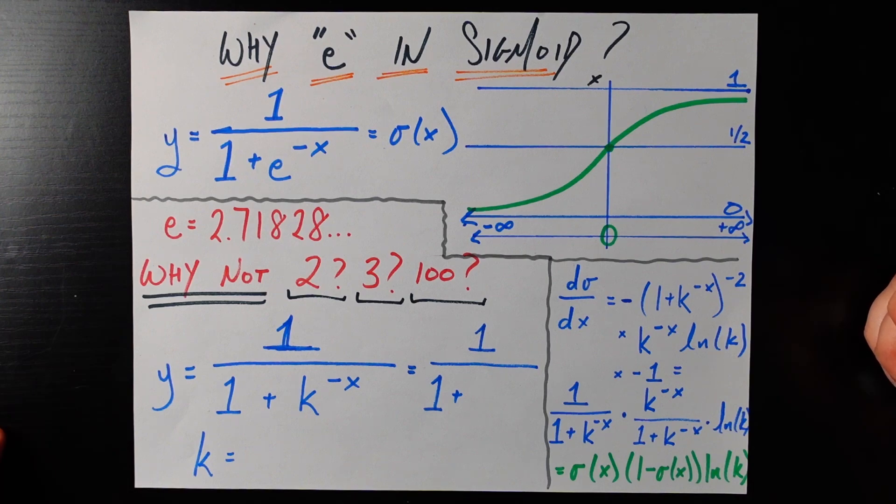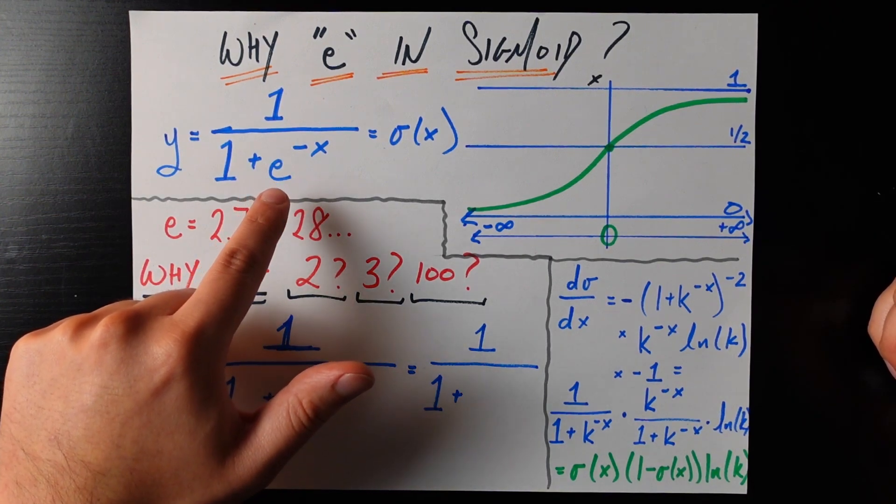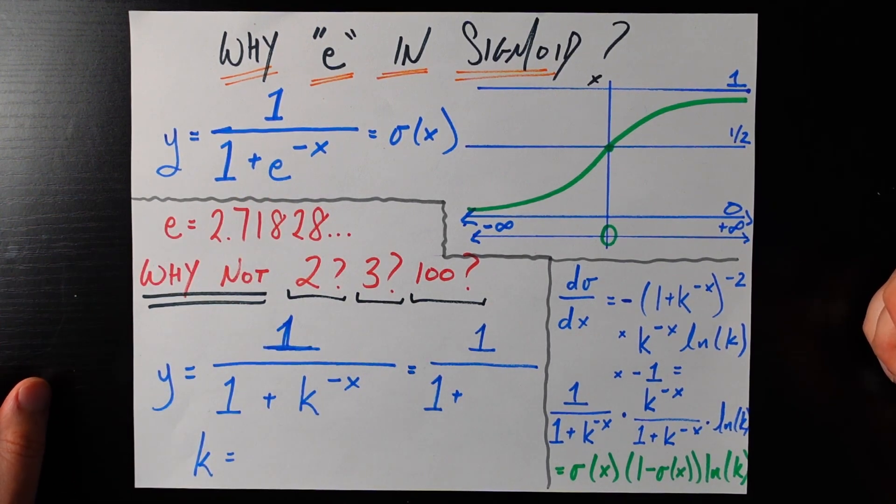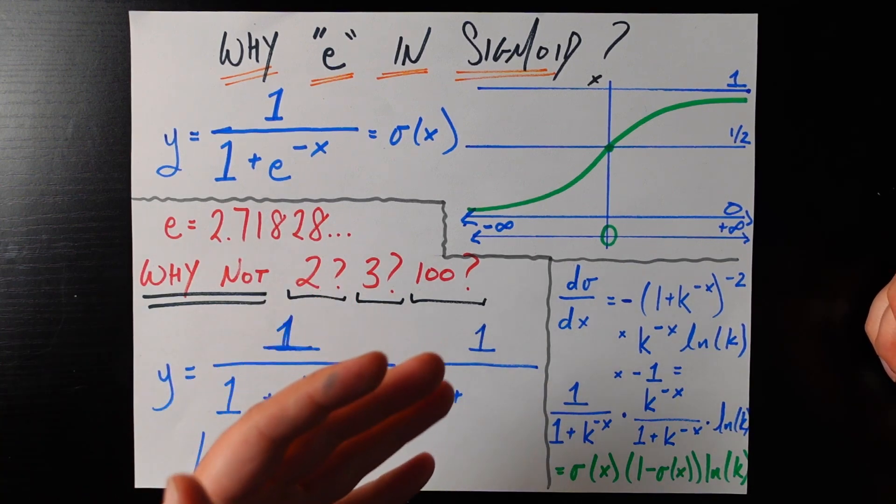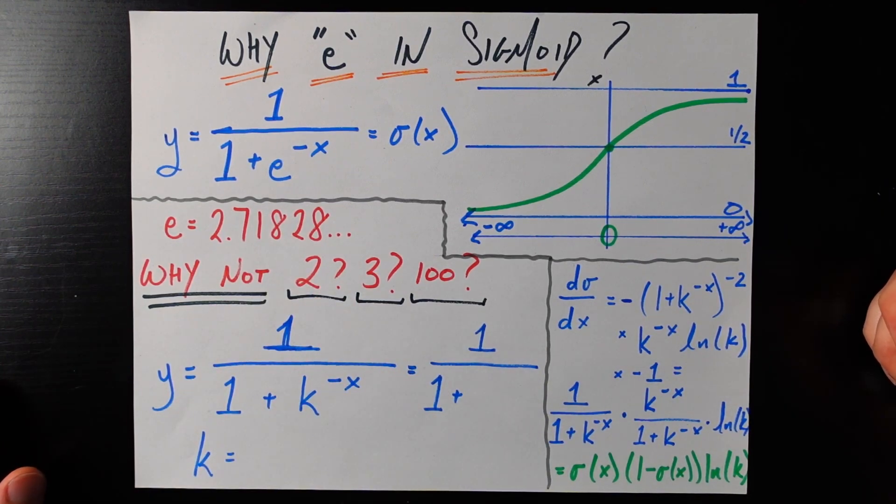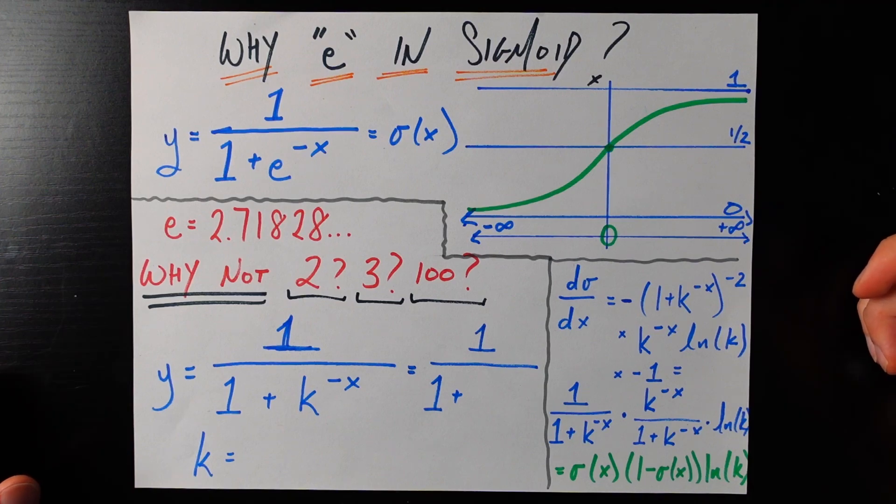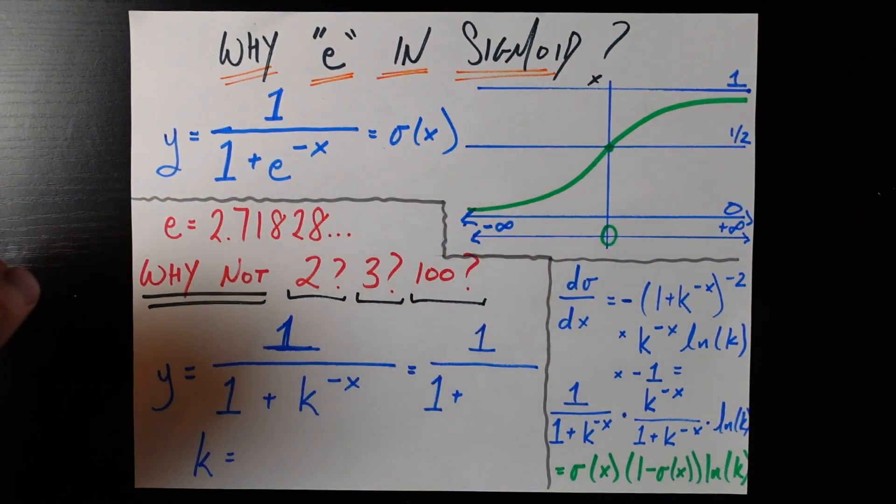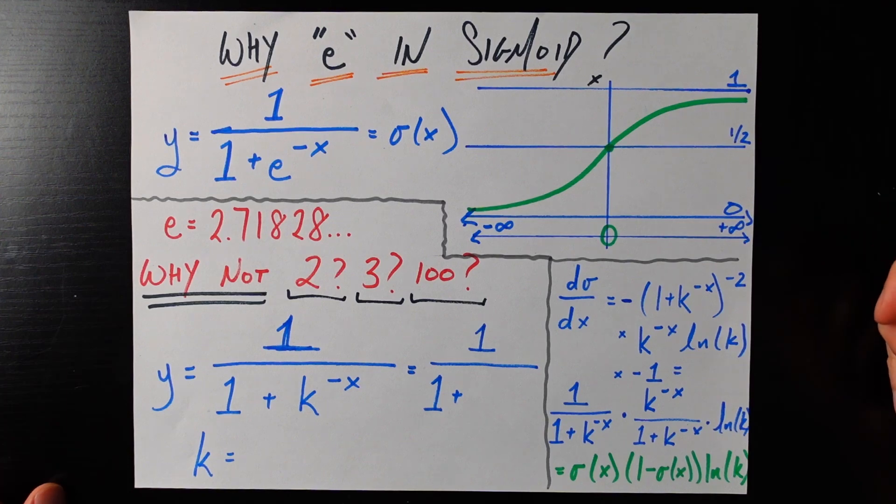So we know why it's useful but why does the number here have to be e? Why can't it be 2 or 3 or 100 or something else? In fact if we put any of those numbers in there it's still going to be an s-curve, it's just going to be stretched out or squashed in the horizontal direction.